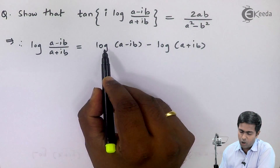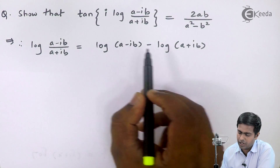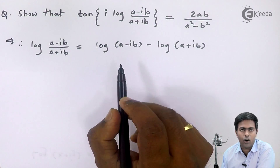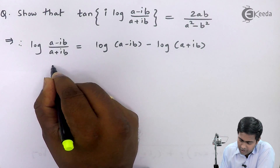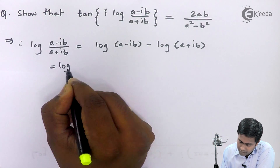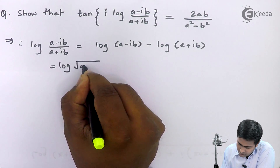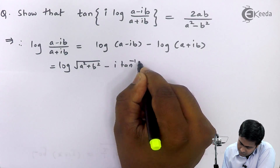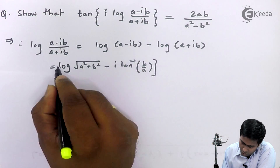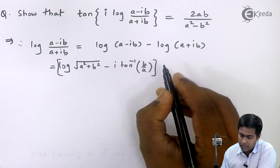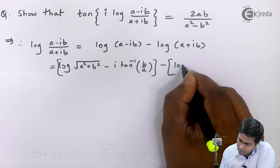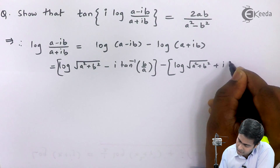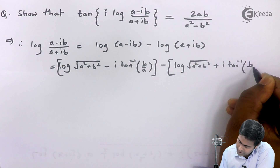Now log(a − ib) is a complex number, so we apply the formula for the logarithm of a complex number. We get log(√(a² + b²)) − i·tan⁻¹(b/a). Similarly, log(a + ib) gives log(√(a² + b²)) + i·tan⁻¹(b/a).